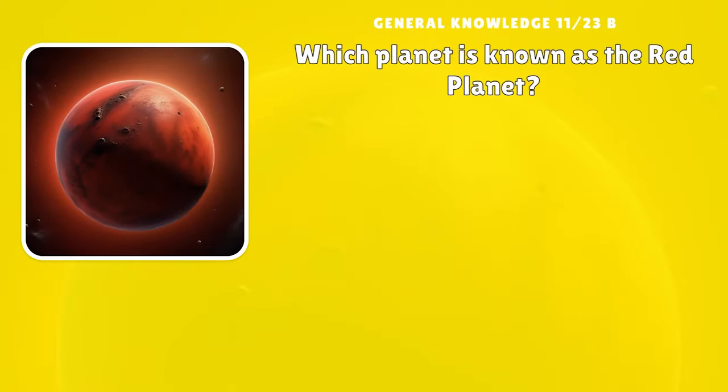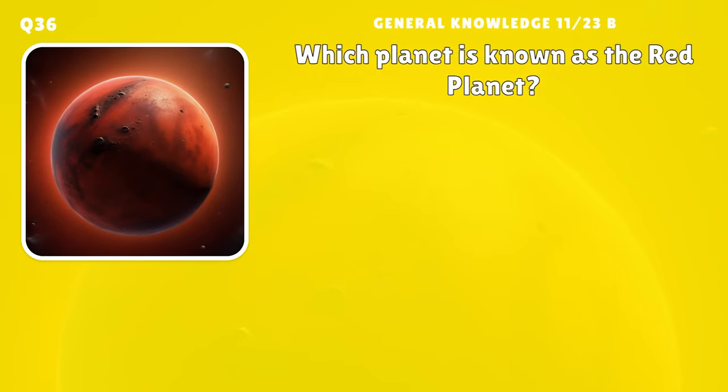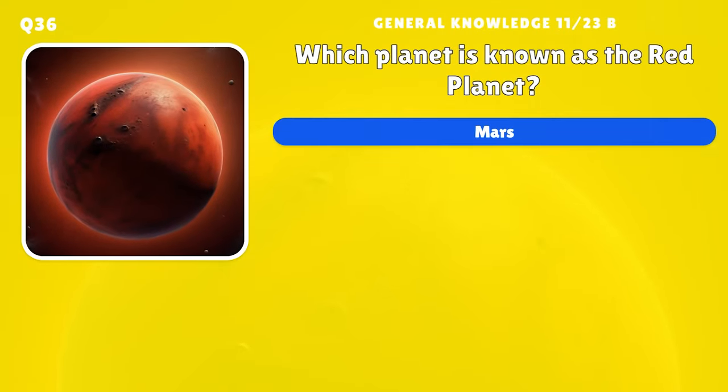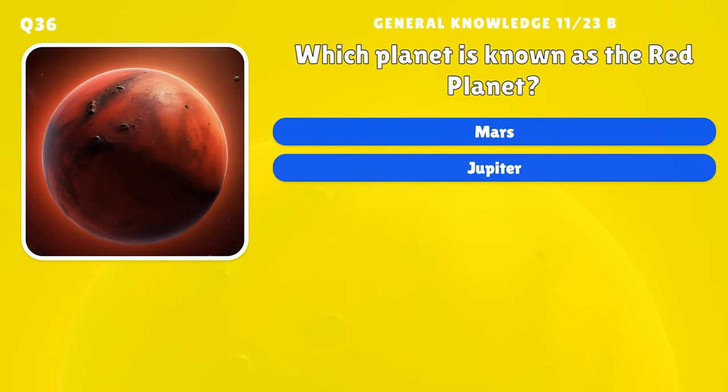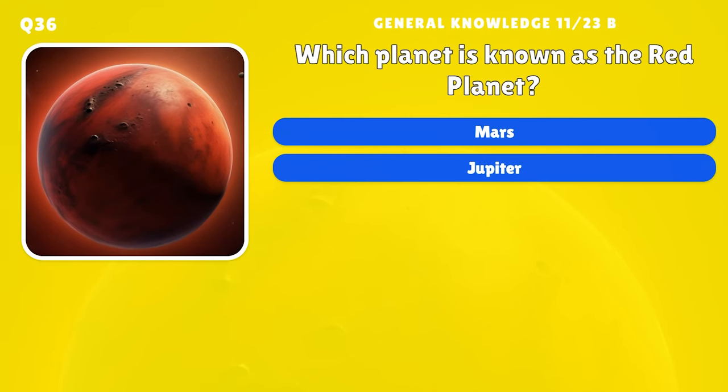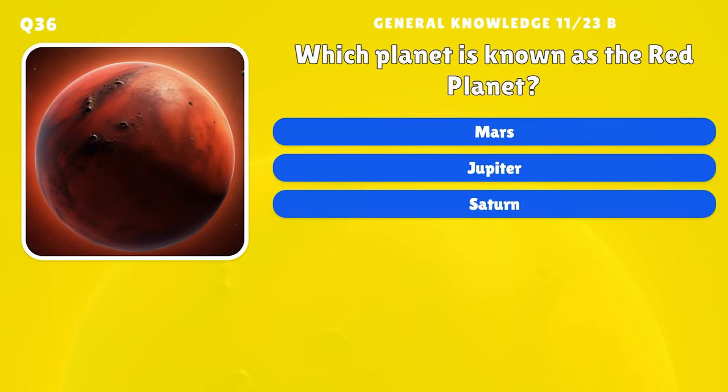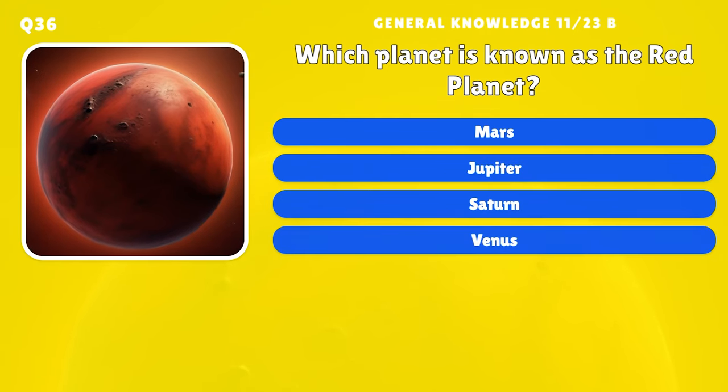Which planet is known as the red planet? A) Mars, B) Jupiter, C) Saturn, D) Venus.